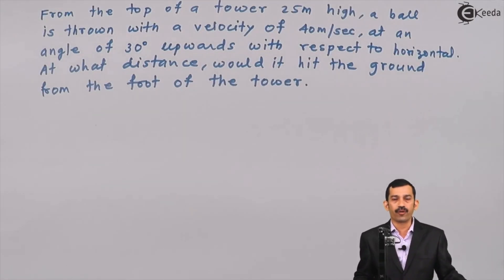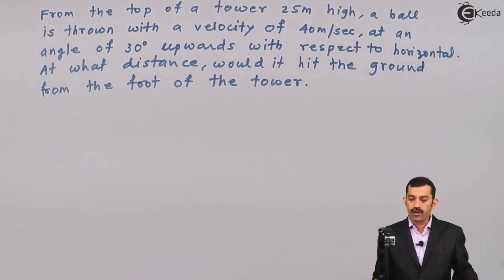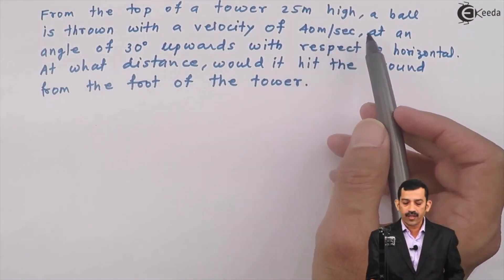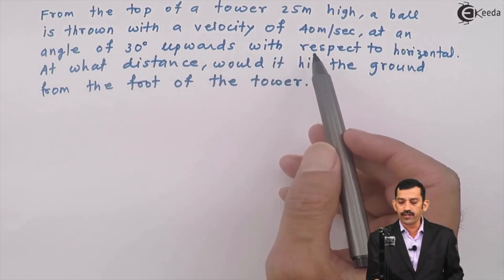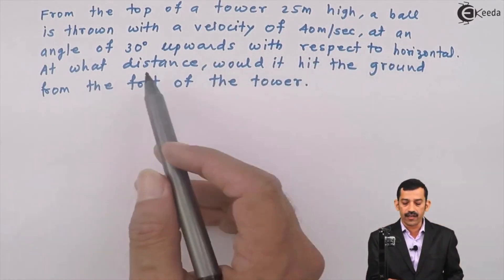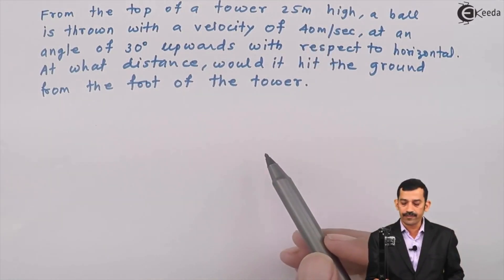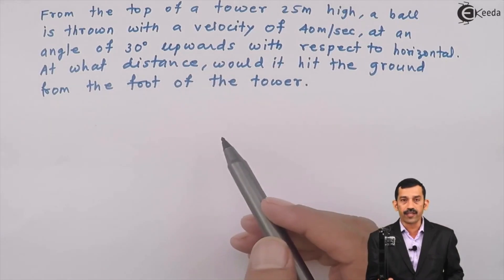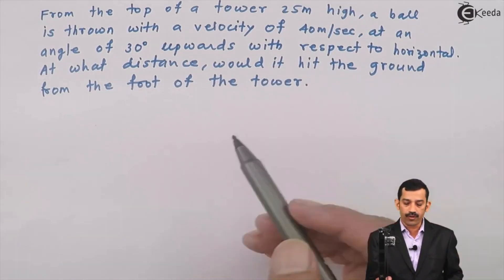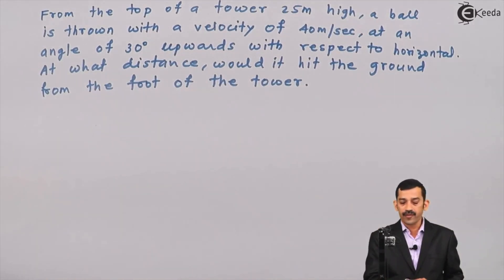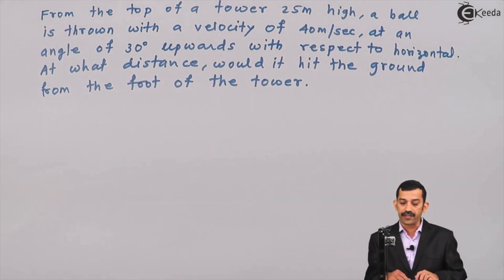To solve this problem on projectile motion: from the top of a tower 25 meters high, a ball is thrown with a velocity of 40 meters per second at an angle of 30 degrees upwards. So u₀ = 40 m/s and θ₀ = 30°. We need to find the horizontal distance from the foot of the tower where it hits the ground.